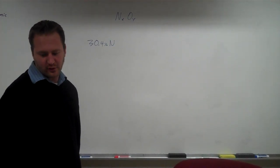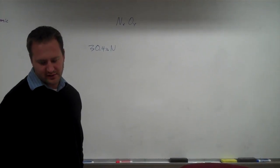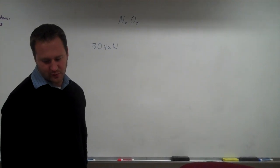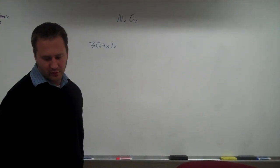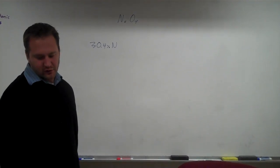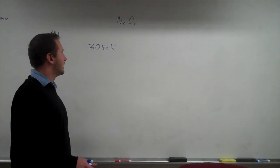A compound that contains only nitrogen and oxygen is 30.4% nitrogen by mass, and the molar mass of this compound is 92 grams per mole. What is the empirical formula of this compound, and what is the molecular formula of this compound? So first let's just find the empirical formula, or the lowest whole number ratio of the elements here.